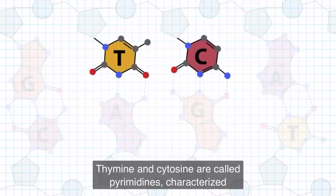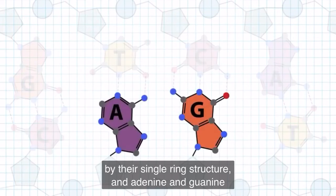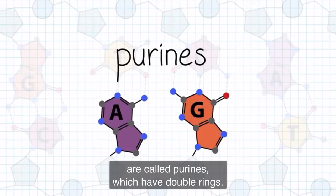Thymine and cytosine are called pyrimidines, characterized by their single ring structure. And adenine and guanine are called purines, which have double rings.